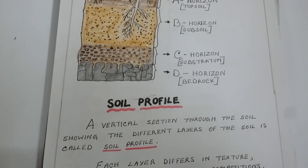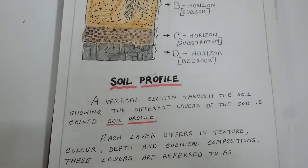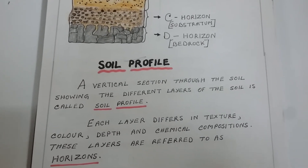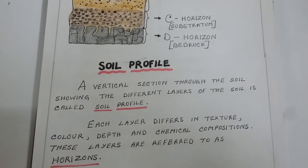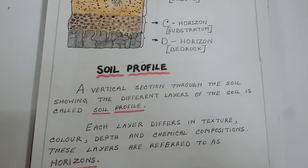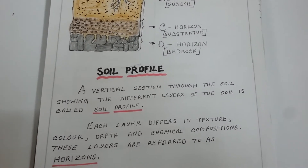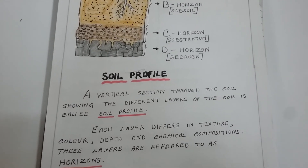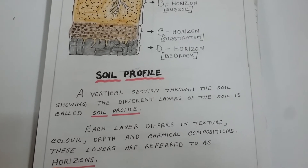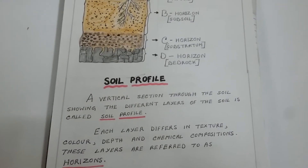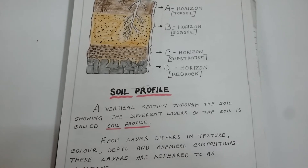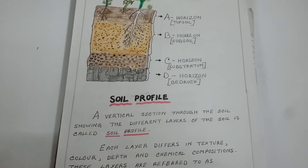Each layer differs in texture, color, depth and chemical composition. These layers are referred to as horizons. Soil profile can also be seen while digging a well or laying the foundation of a building. It can also be seen at the sides of a road, on a hill, or at a steep river bank. Let us study the different inner layers or horizons of the soil in detail.